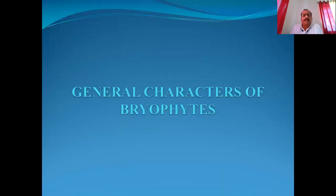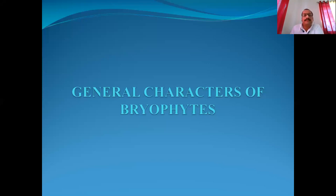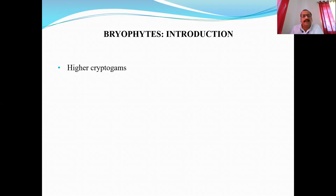We will start our today's topic on introduction and general characters of bryophytes. We studied in the previous lectures the classification of the Plant Kingdom proposed by scientist Eichler, and according to him, the group Bryophyta and the plants in that group, called bryophytes, belong to the higher cryptogames. Cryptogames are non-flowering, seedless plants of two types: lower cryptogames and higher cryptogames, based on primitive and advanced characters.